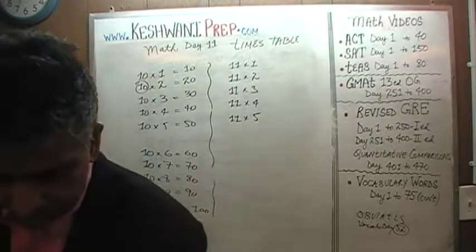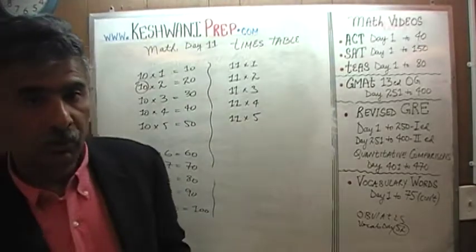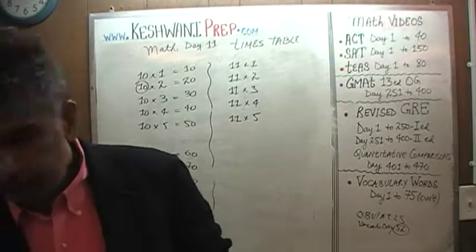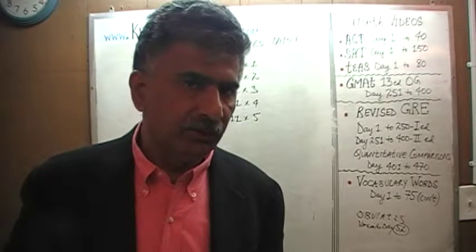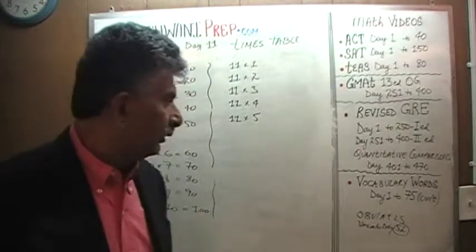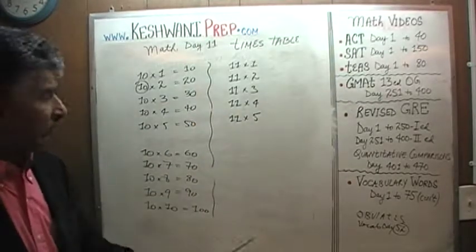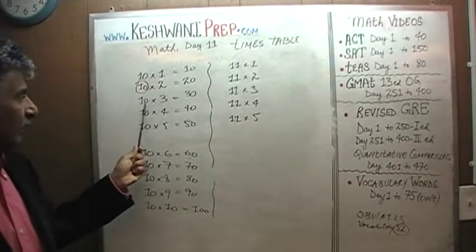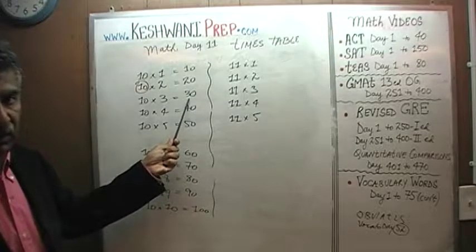Now if you recall day before yesterday — day number 9 — and if you have not watched day number 9, this would be a good time to pause this video and watch day number 9 first. I take it for granted that you have been watching these videos in their proper sequence because things build on each other. On day number 9, the trick we used to figure out the tables of 9s: if you wanted to find 9 threes, 9 threes would have to be the same as 10 threes — which is 30 — minus 1 three. So if you have 10 threes and take away 1 three, that's 9 threes.